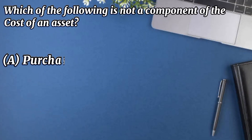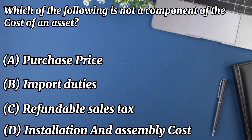Which of the following is not a component of the cost of an asset? The options are: purchase price, import duties, refundable sales tax, and installation and assembly cost. Purchase price, import duties, and installation and assembly cost are all capitalized as part of the asset's cost. However, refundable sales tax is not included — it is not a component of cost. So the correct answer is refundable sales tax.